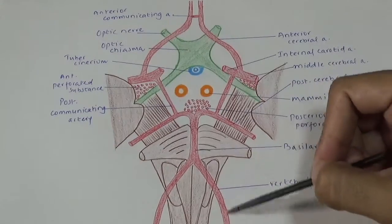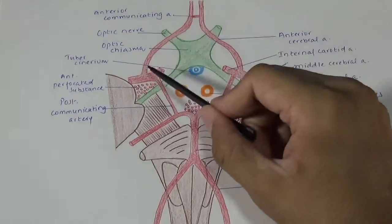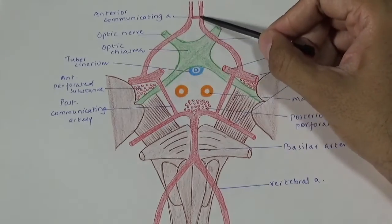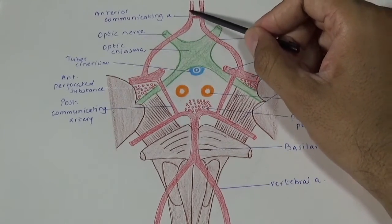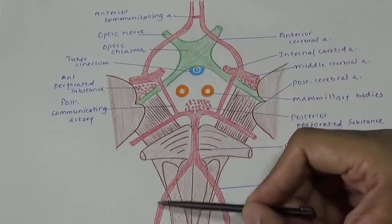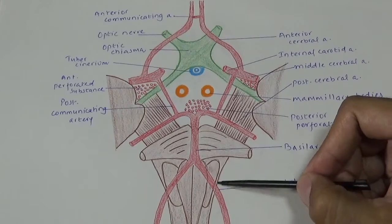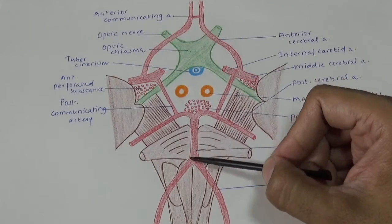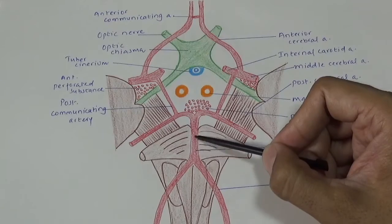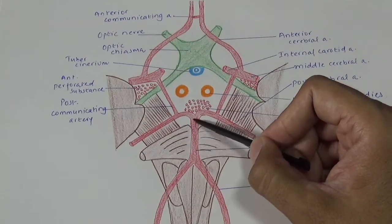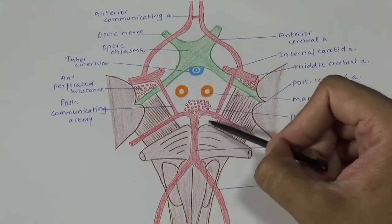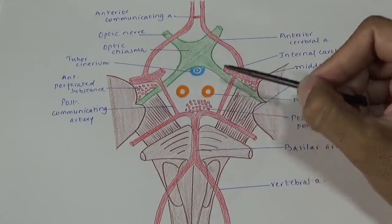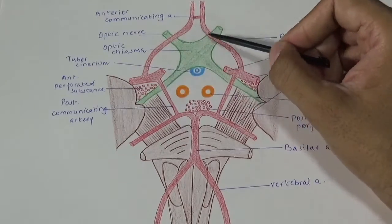The circle of Willis is formed by branches of two internal carotids and the two fourth parts of the vertebral arteries. These two are the internal carotids, which give the anterior cerebral arteries; these two are connected by the anterior communicating artery. Posteriorly, the two fourth parts of the vertebral arteries join at the lower border of the pons to form the single basilar artery, which lodges in the median sulcus along the ventral surface of the pons. The basilar artery bifurcates at the upper border of the pons into two posterior cerebral arteries, connected by the two posterior communicating arteries.